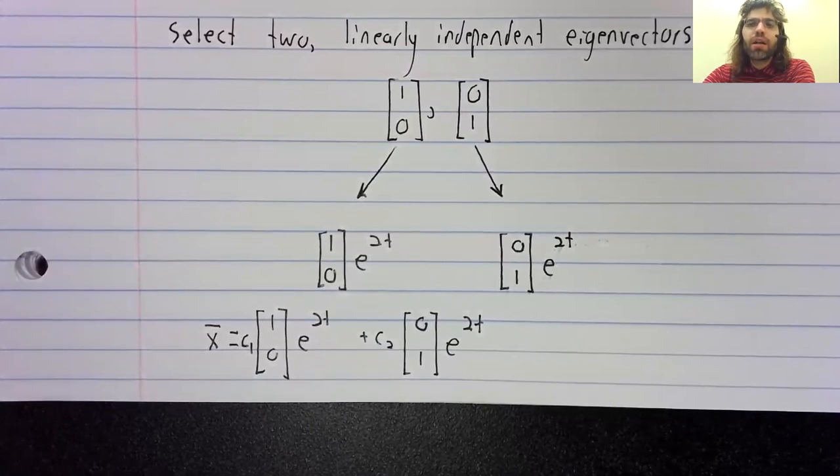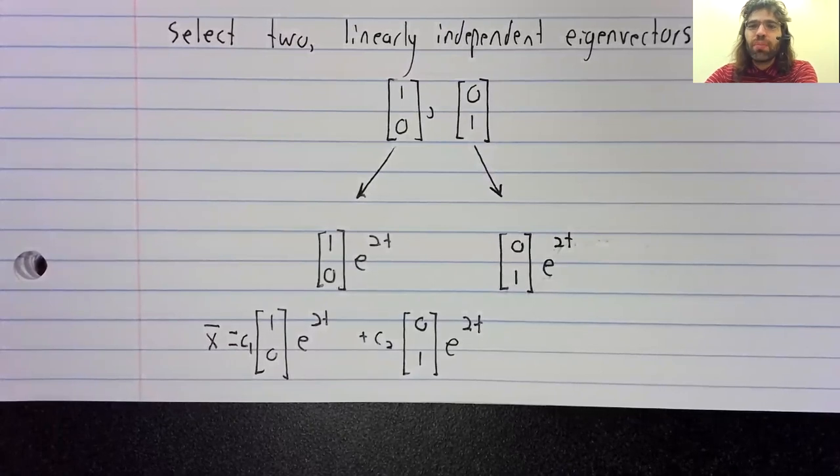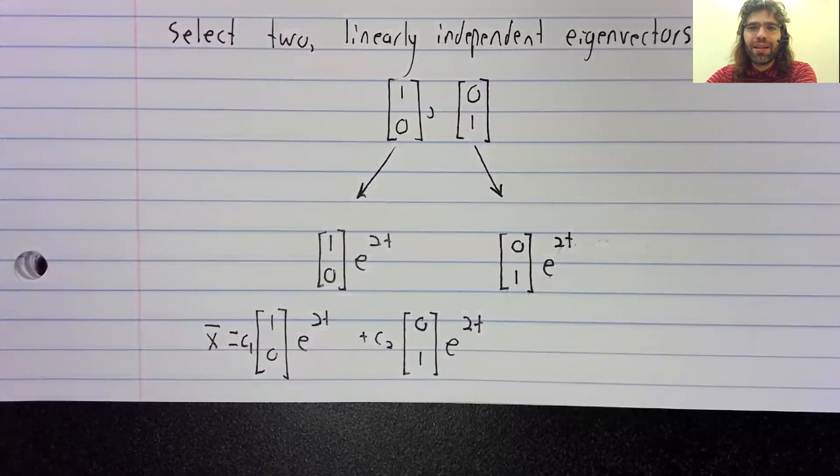So that's one case. That's the nice case. You might have fewer than n eigenvalues, and everything works out nicely anyway. There's another case, though. We'll put that off as its own video.